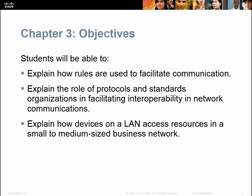The objectives for this section — what you should be learning out of Chapter 3 — are: explain how we use rules to facilitate communication, explain the role of protocols and standards, why we have protocols, why we have standardization in networking, and then explain how devices on a LAN, local area network, access resources in a small to medium-sized business network.